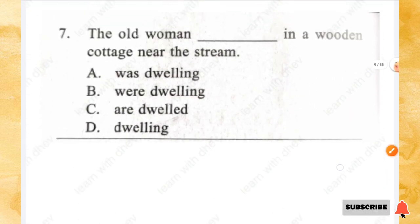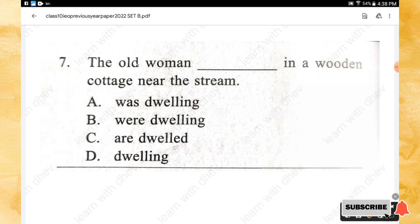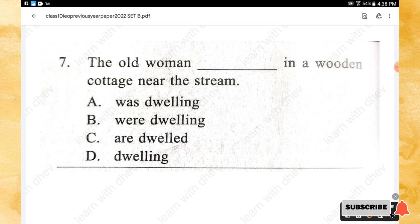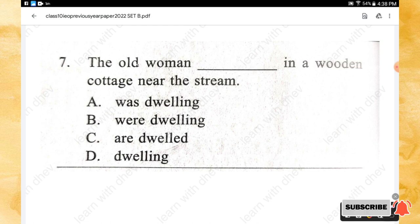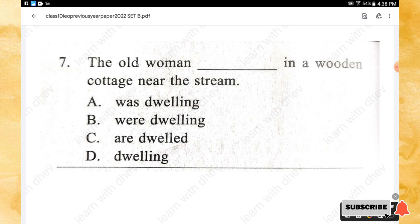Question 7: The old woman _____ in a wooden cottage near the stream. Options: was dwelling, where dwelling, are dwelled, dwelling. The right answer is option A — was dwelling.